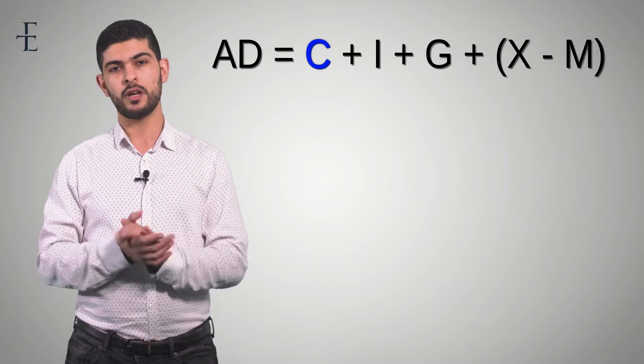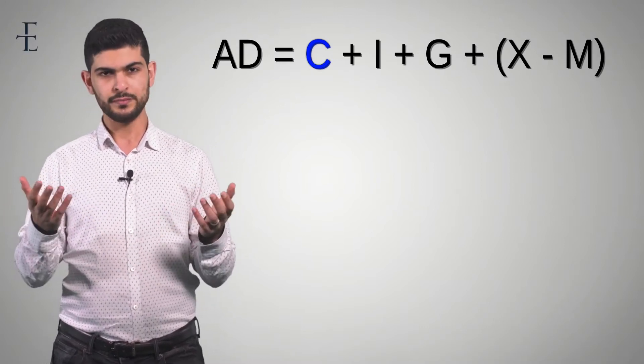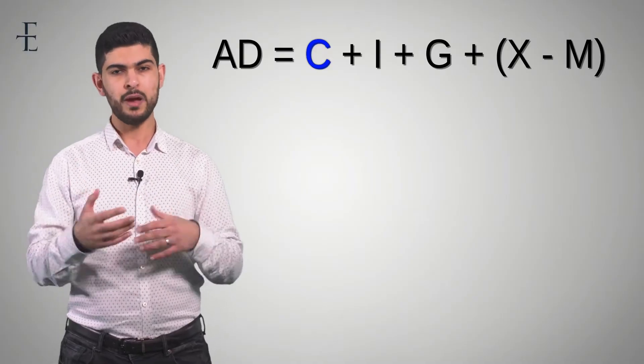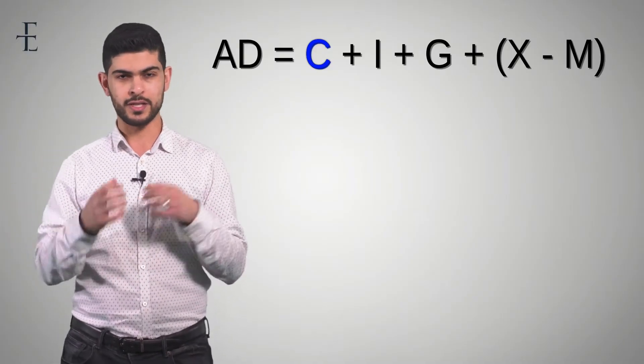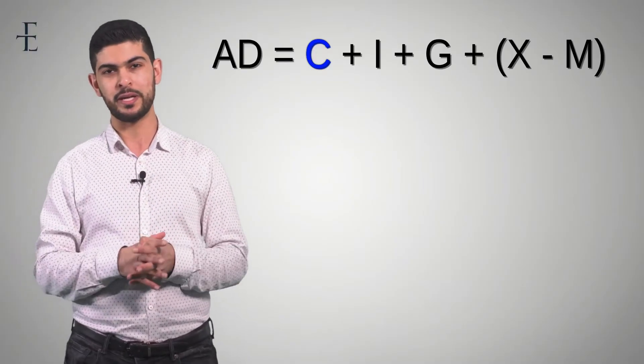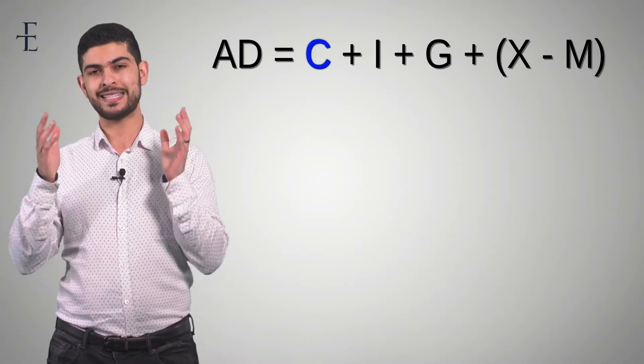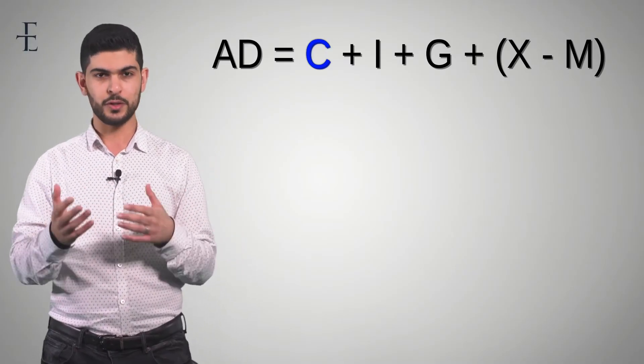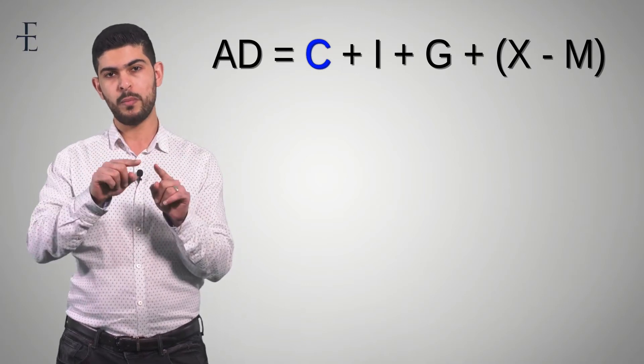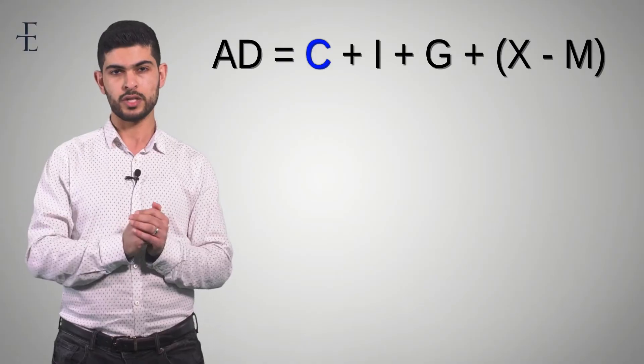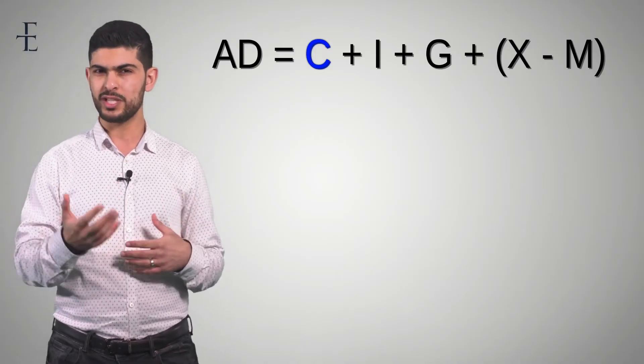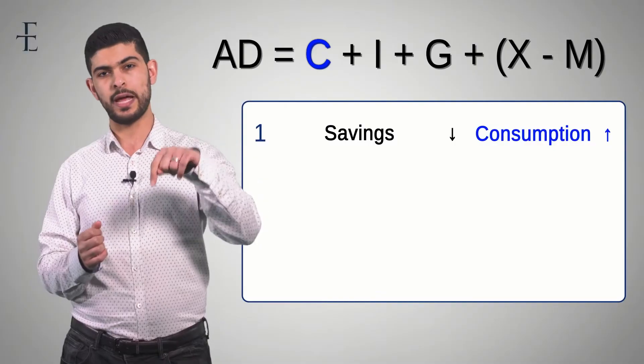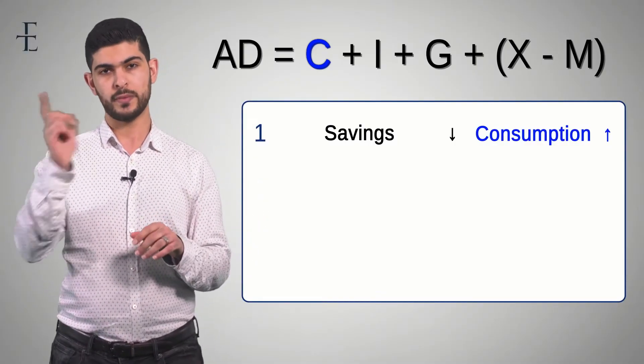Question number one: When interest rates are low, are individuals more or less likely to save? Well, the answer to that is that they are less likely to save. And the rationale is simply this: When you go and put money in a bank, you are essentially lending money to the bank when you put money in your account. In return for that, you get an interest rate. Well, if interest rates are low, there isn't that much incentive for me to put that much money into my account because I'm not going to get that much. So number one, savings are therefore going to go down. And if savings go down, it must be that consumption is going to go up.